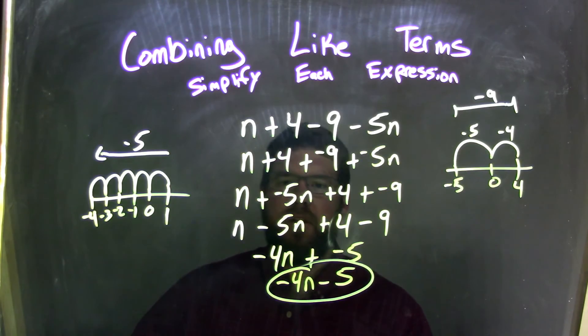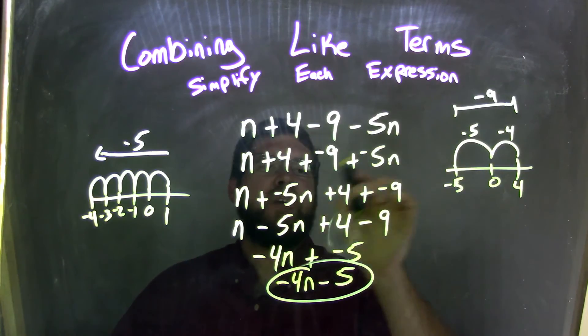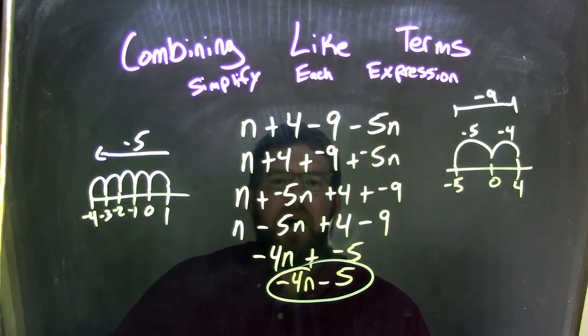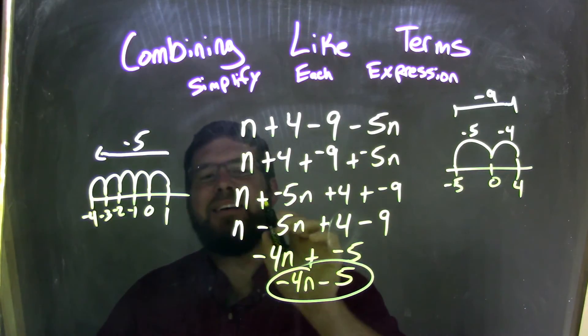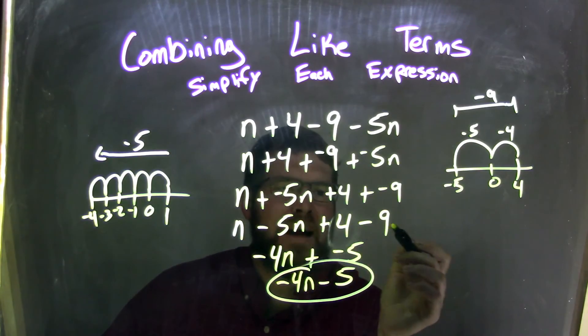Now I rearrange using the commutative property to write n plus negative 5n plus 4 plus negative 9, and double-check that all my ducks were in a row here. Well, I put it back to be subtractions, so n minus 5n plus 4 minus 9.